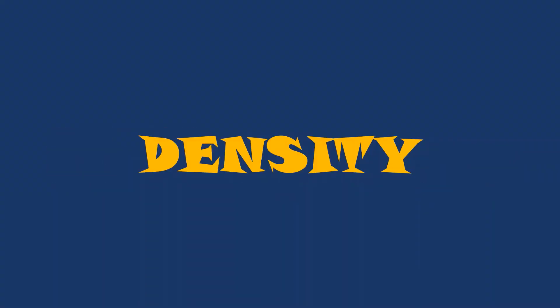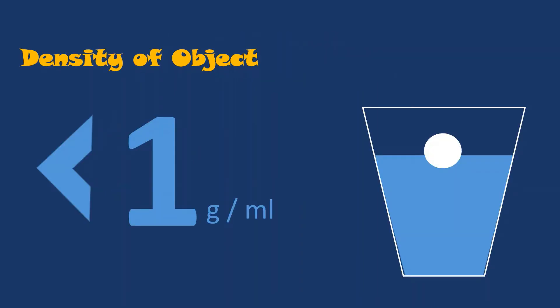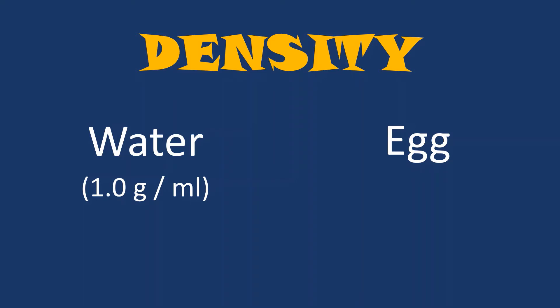The answer lies in the density of water. Water has a density of 1 gram per milliliter. Objects float in water if their density is less than 1 gram per milliliter. Objects sink if their density is more than 1 gram per milliliter. The density of egg is about 1.03 gram per milliliter.